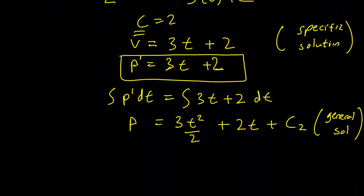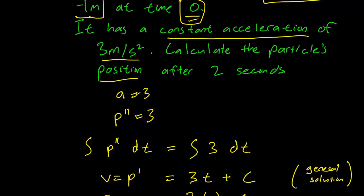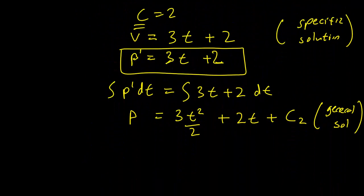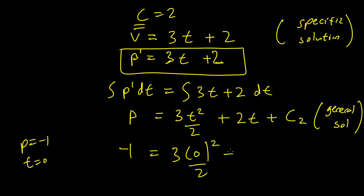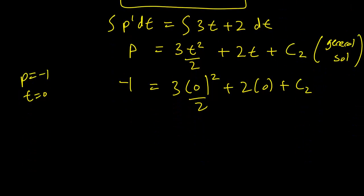This implies that our position is going to be minus 1 when t equals 0. So we just plug that in: p equals minus 1, t equals 0.